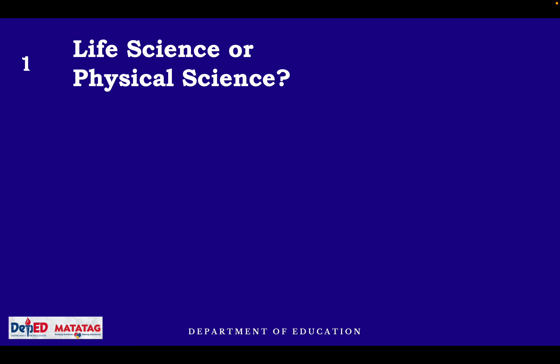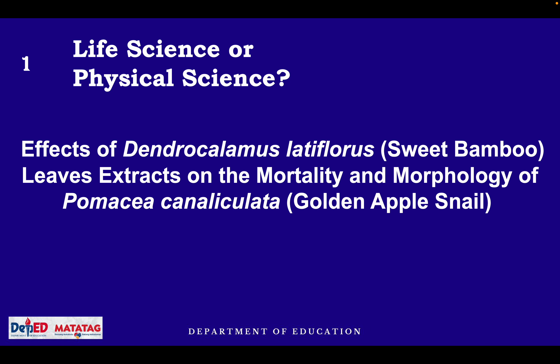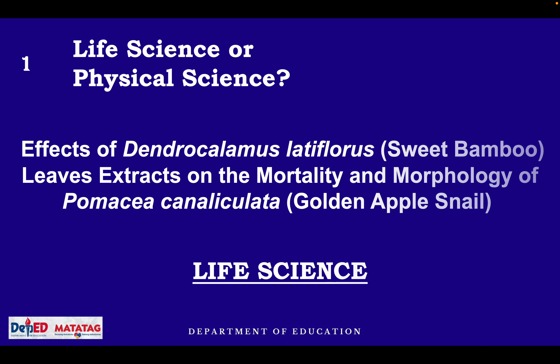Let us read some sample SIP topics for the life science category. Number one: Effects of Dendrocalamus latiflorus (sweet bamboo) leaves extract on the mortality and morphology of the golden apple snail — the focus is on the mortality and morphology of the golden apple snail when sweet bamboo leaf extracts are applied. The answer is life science.